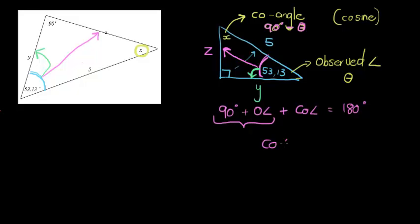then I get that my co-angle is equal to 180 degrees minus 90 degrees minus the observed angle. Now I call the observed angle theta. In other words, 180 minus 90 gives me 90 degrees minus the observed angle, which we are going to call theta. So if this is equal to theta, then that one is 90 degrees minus theta.